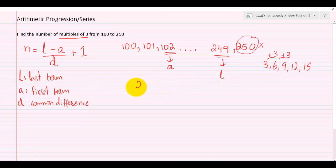So we have the last term which is 249. n is equal to 249 minus the first term which is 102, divided by the common difference which is 3, plus 1. So 249 minus 102 is 147 upon 3, plus 1.